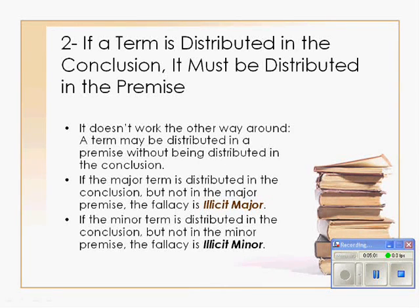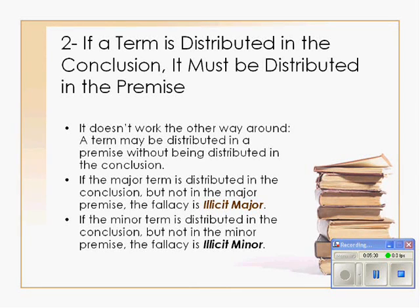Rule number 2: if a term is distributed in the conclusion, it must be distributed in the premise. So circle the distributed terms and write out your syllogism. Look at your conclusion — if the major term, that is the predicate of the conclusion, is distributed in the conclusion but not in the premise, the fallacy is going to be illicit major. Note that this does not work the other way around: if a term is distributed in the premise, it does not have to be distributed in the conclusion. All this is saying is that if a term is distributed in the conclusion, it must be distributed in the premise.